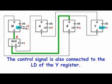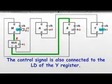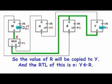The control signal is also connected to the load of the Y register. So, the value of R will be copied to Y and the RTL of this is if N, R will be copied to Y.